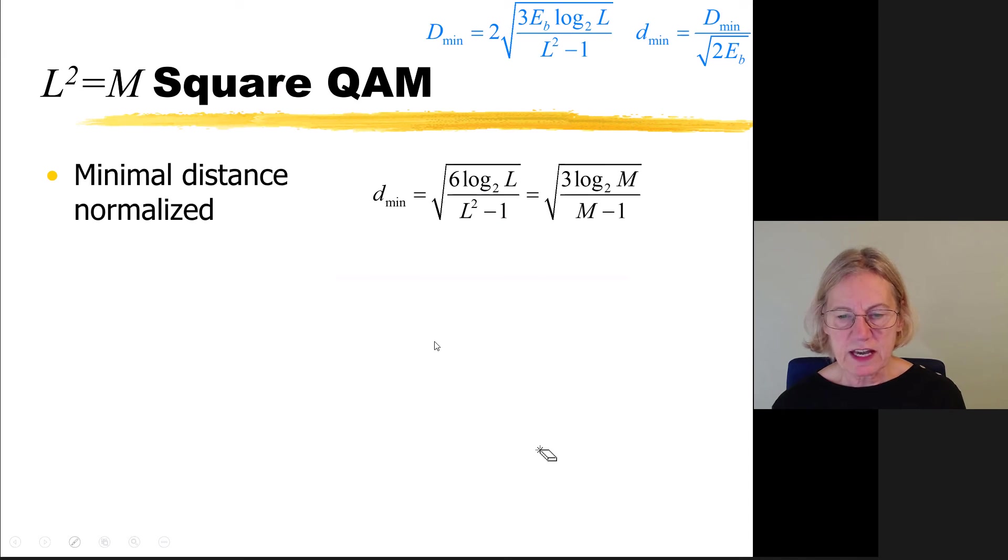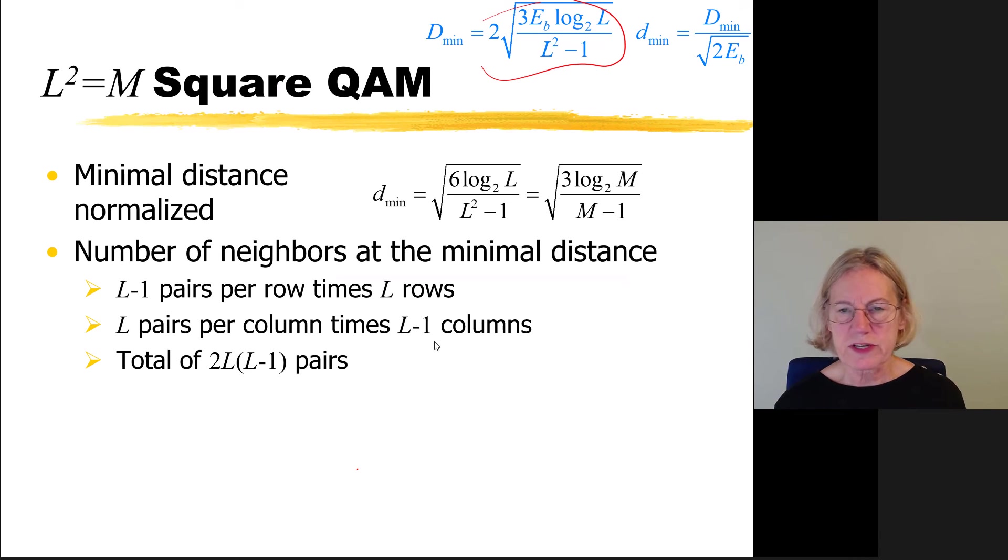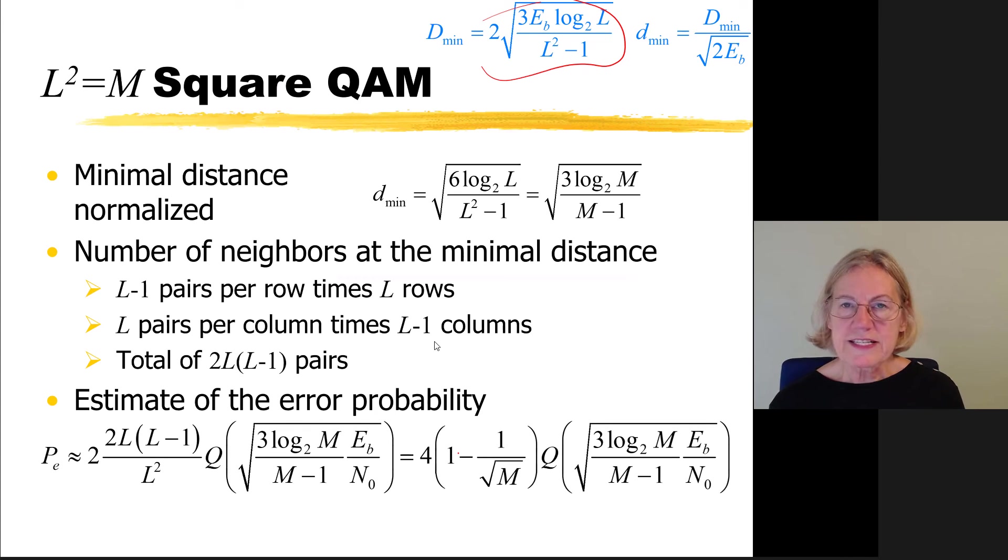So now I have the dmin that I've just calculated. And the next thing is to extrapolate to find K. And just as we counted in the case of 16-QAM, we could do a similar counting where there are L minus 1 pairs per row, L rows, etc. So we get a total of 2L times L minus 1 pairs in the constellation. So we can plug this in now into our general equation coming from the approximation coming from the union bound. And we get this equation for the probability of error for a square QAM constellation.